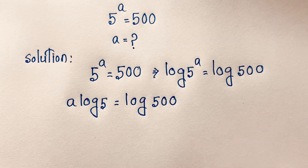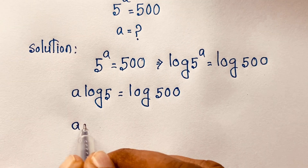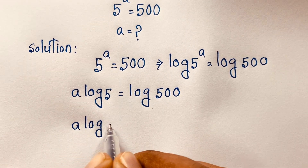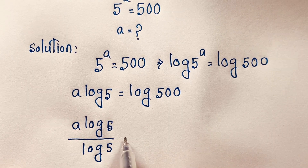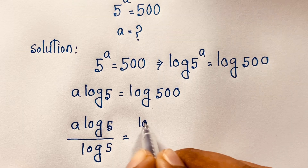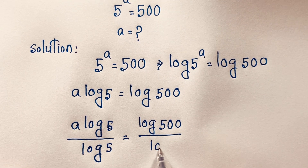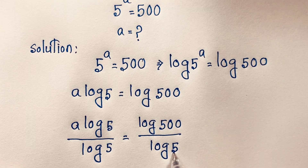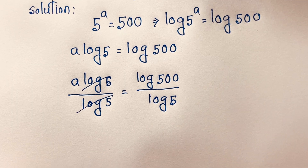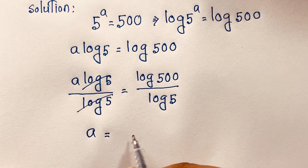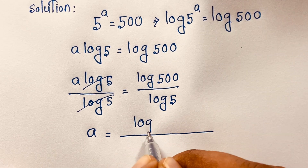Now I divide both sides by log 5. So a equals log 500 over log 5. The log 5 terms cancel out, giving us a is equal to log 500 over log 5.